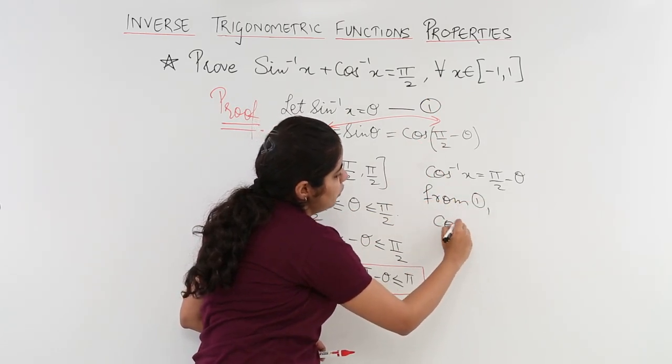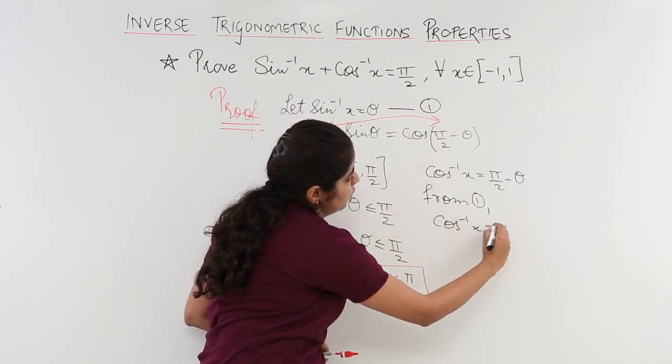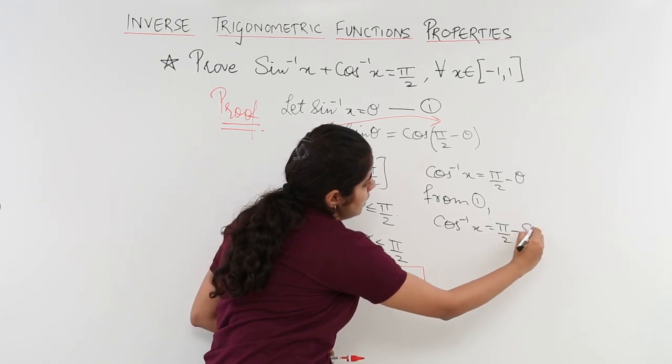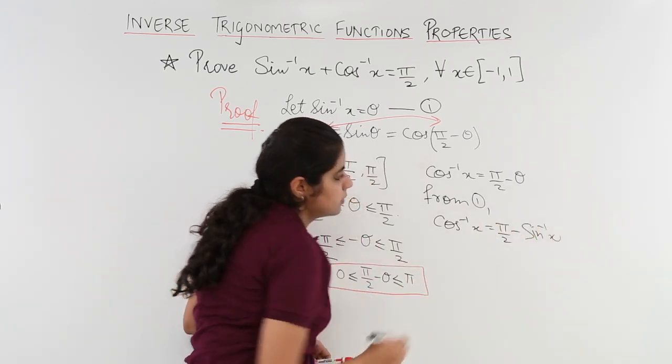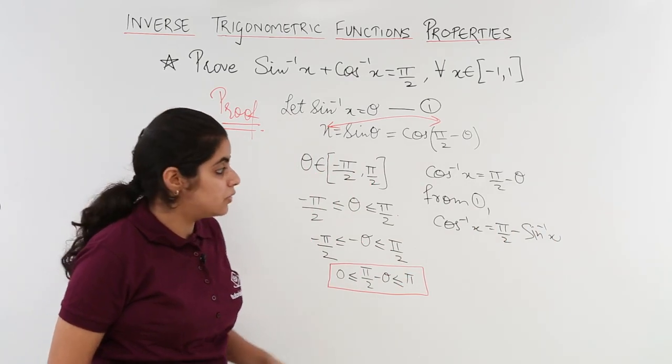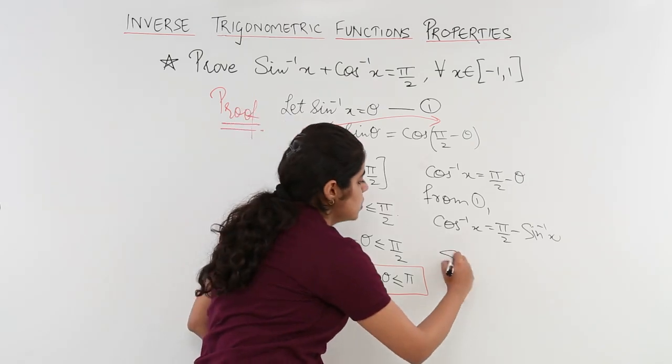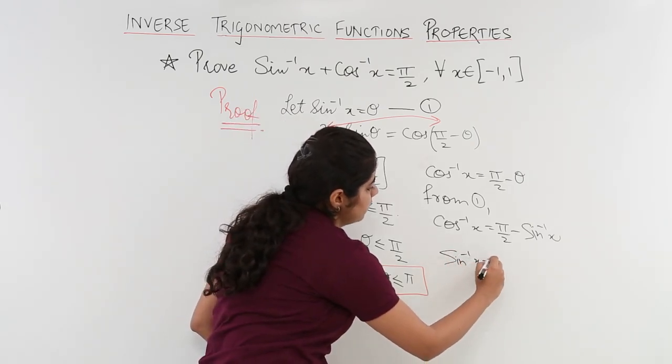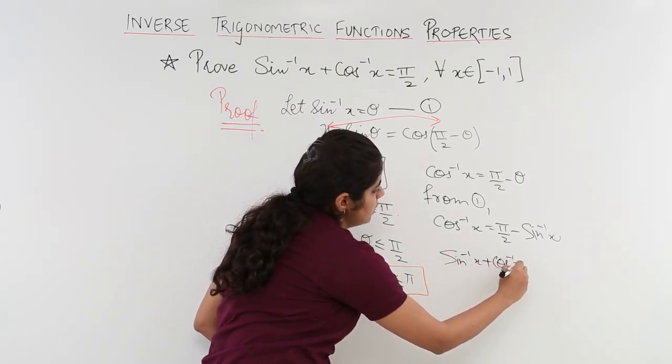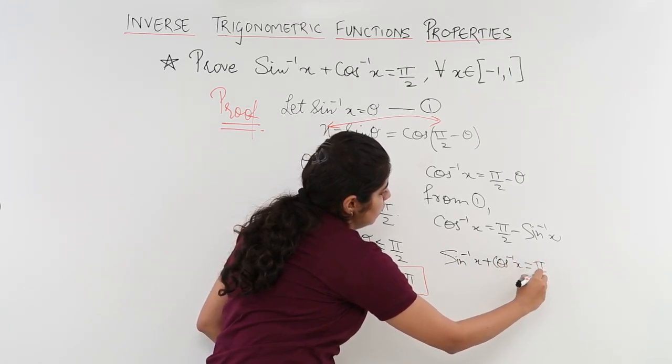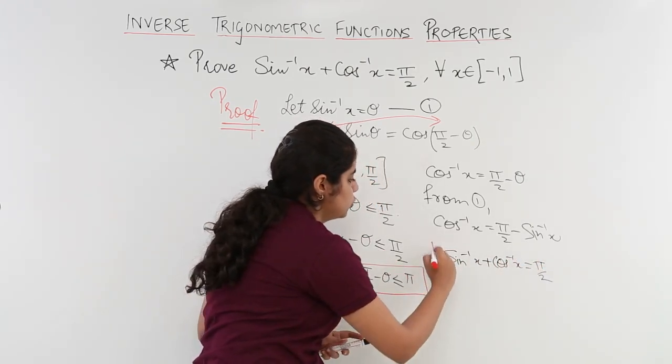So from 1 I have cos inverse x is equal to pi by 2 minus sin inverse x and minus sin inverse x is on the other side you want to take it to the side of cos inverse x it becomes plus. So sin inverse x plus cos inverse x is equal to pi by 2.